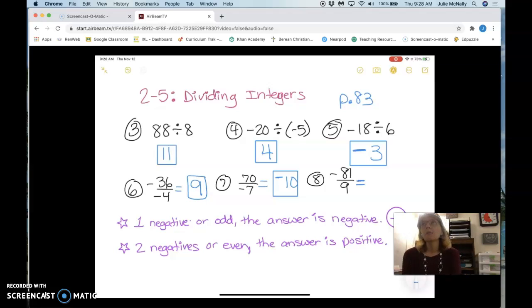Number 8. Negative or positive? Negative. Negative again. And what is 81 divided by 9? 9. 9. Good. All right, copy those down and we'll be right back.